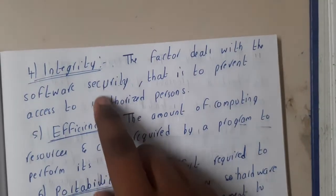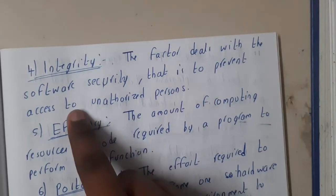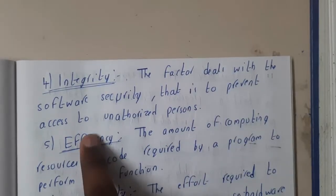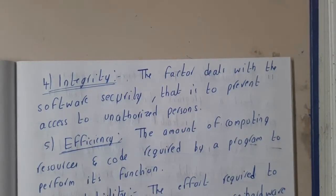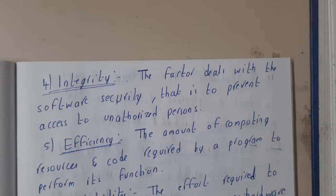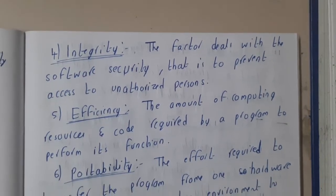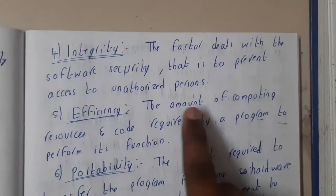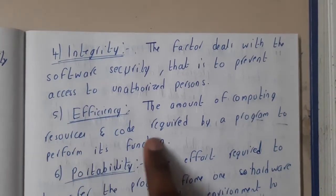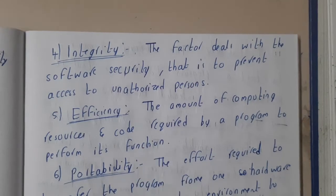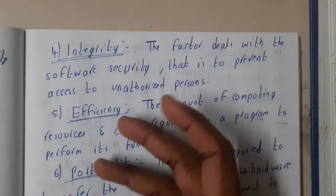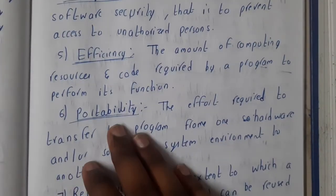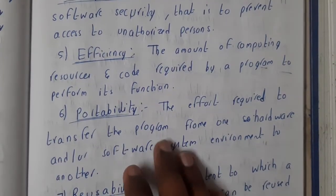Integrity is the factor dealing with software security — that is, to prevent access by unauthorized persons. You need to have some integrity constraints so that there will be no security issues. Efficiency is the amount of computer resources and code required to run the program. If you require less resources and less code, it is more efficient.